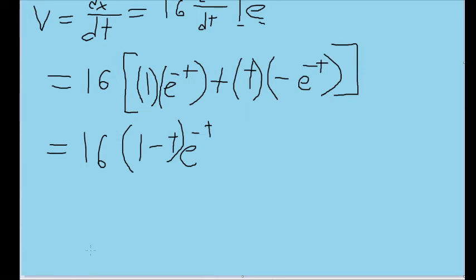Now once again, we're looking for the time when the electron momentarily stops. So that means it's going to be when its speed is equal to zero. So I'm going to set this entire formula here equal to zero.